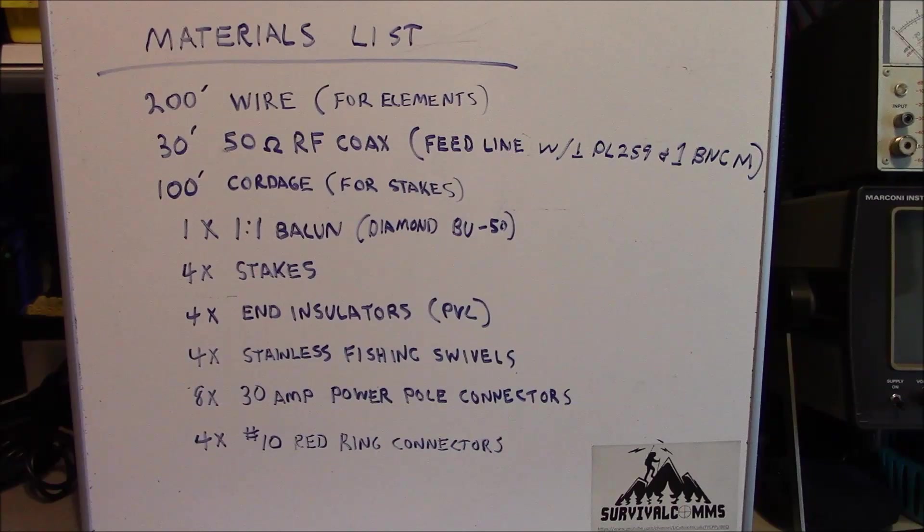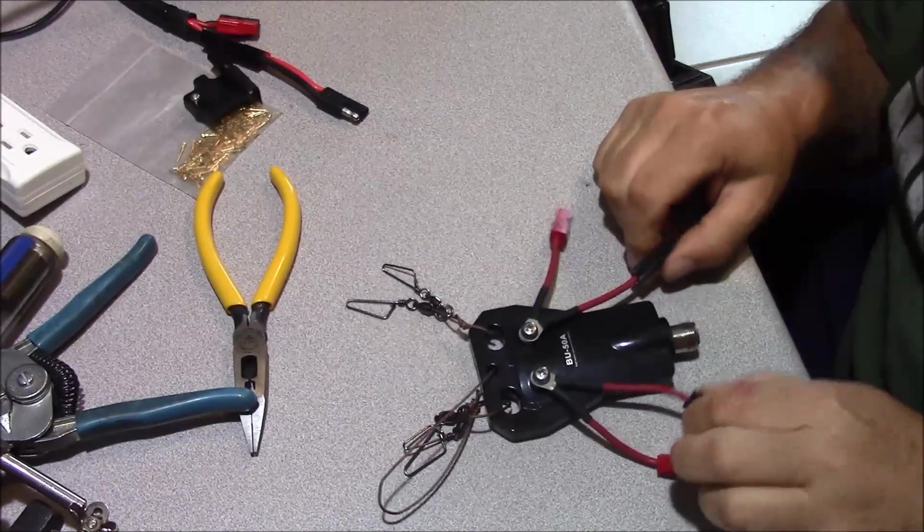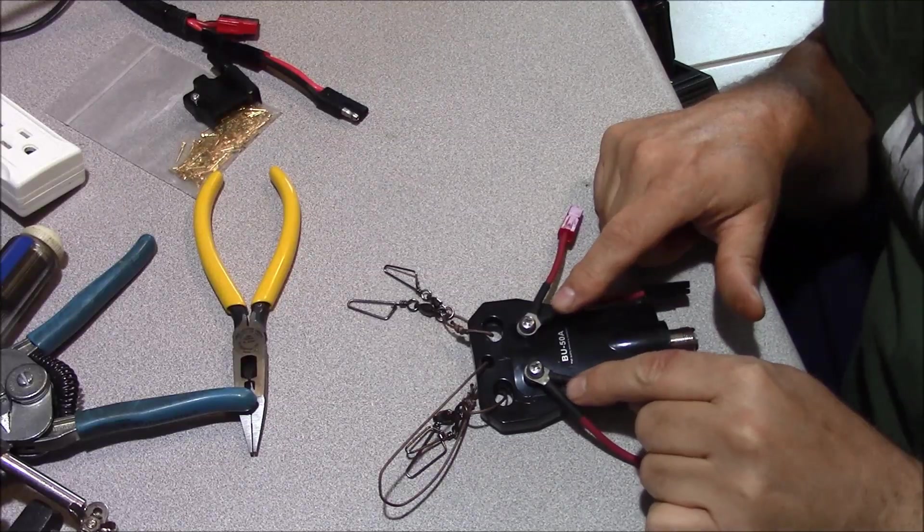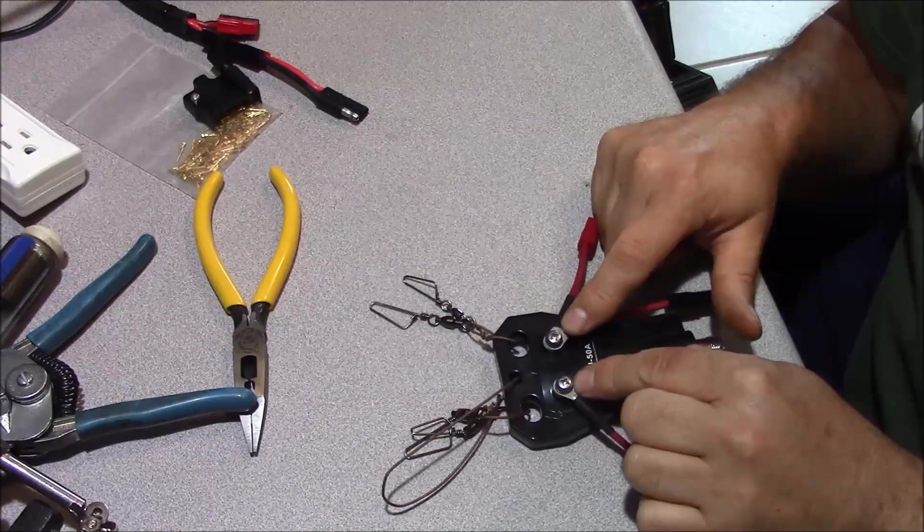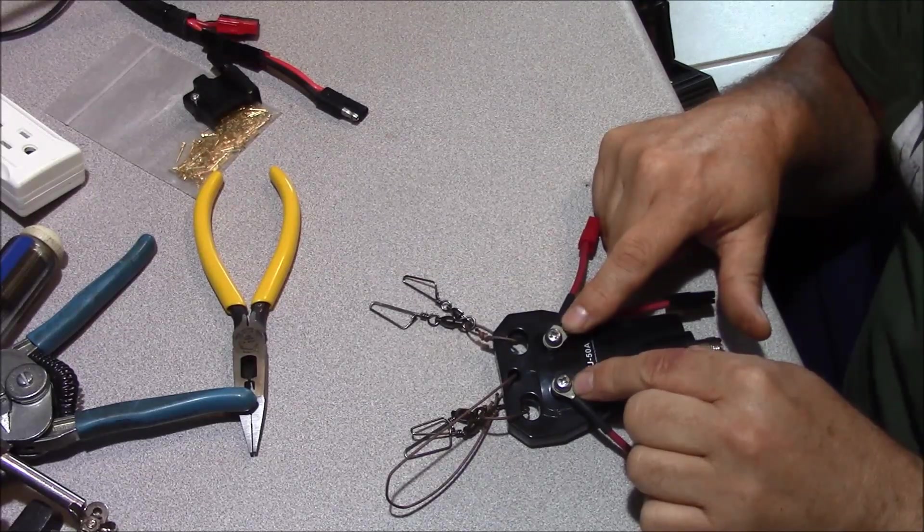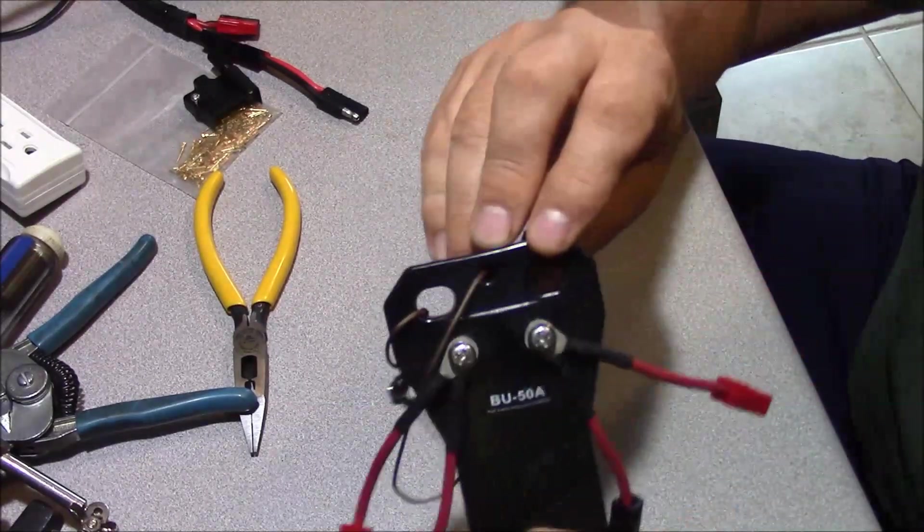Number 10 ring connectors. On our balun you can see our pigtails that we've constructed and you can see our ring terminals that I've soldered to the ends of the jumper. And then I've attached those to the balun at its two connection points that are retained by metric machine screws.